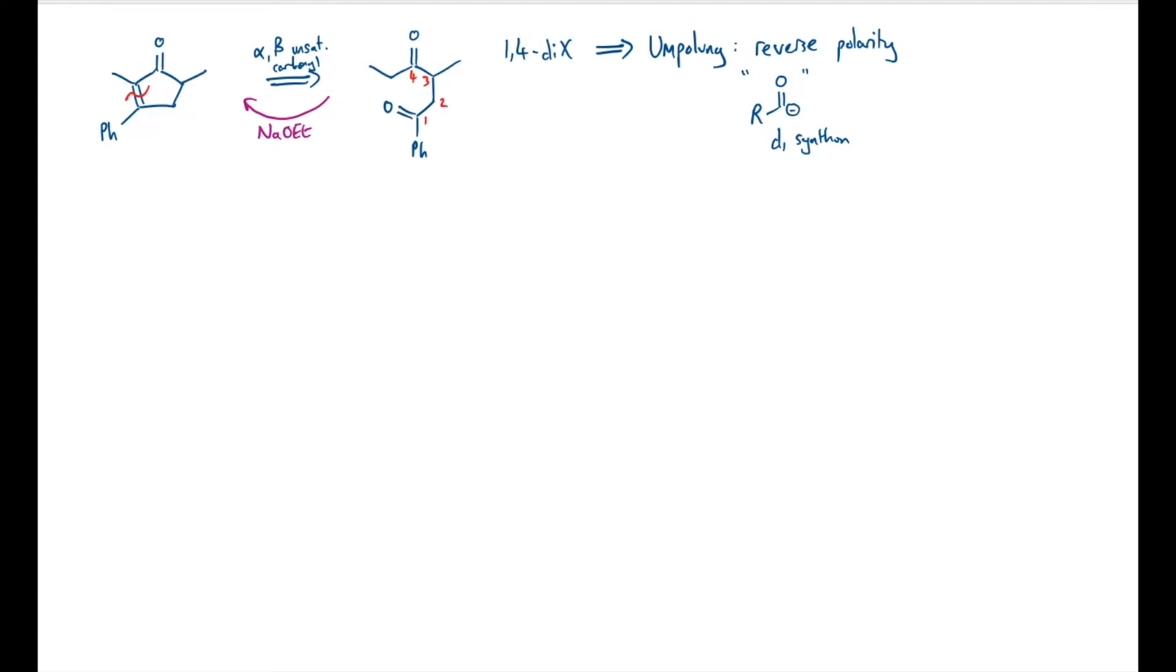Alternatively, while the natural reactivity alpha to a carbonyl is to be a nucleophile as an enolate, the reverse polarity would be to add something like a positive charge in this position, so something that behaves like this reagent. This is known as an a2 synthon.